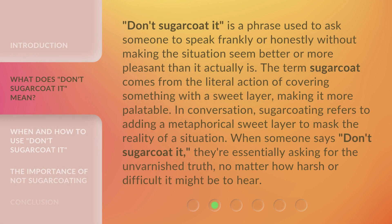Don't Sugarcoat It is a phrase used to ask someone to speak frankly or honestly, without making the situation seem better or more pleasant than it actually is. The term sugarcoat comes from the literal action of covering something with a sweet layer, making it more palatable. In conversation, sugarcoating refers to adding a metaphorical sweet layer to mask the reality of a situation. When someone says don't sugarcoat it, they're essentially asking for the unvarnished truth, no matter how harsh or difficult it might be to hear.